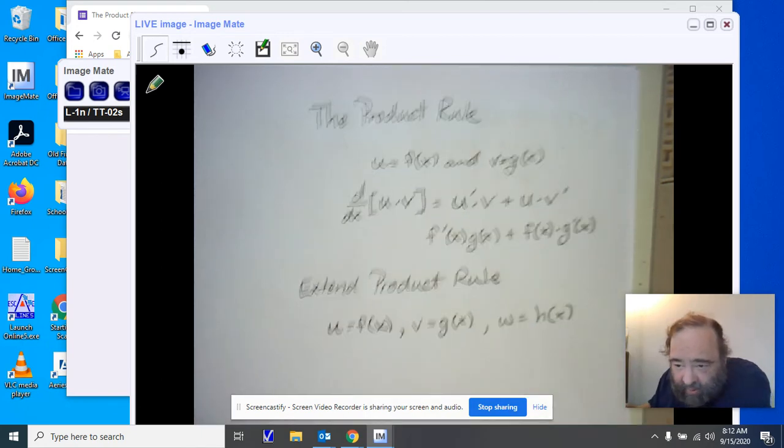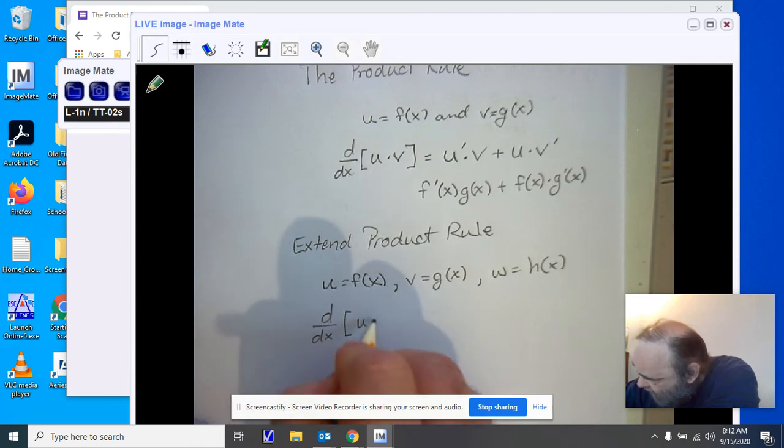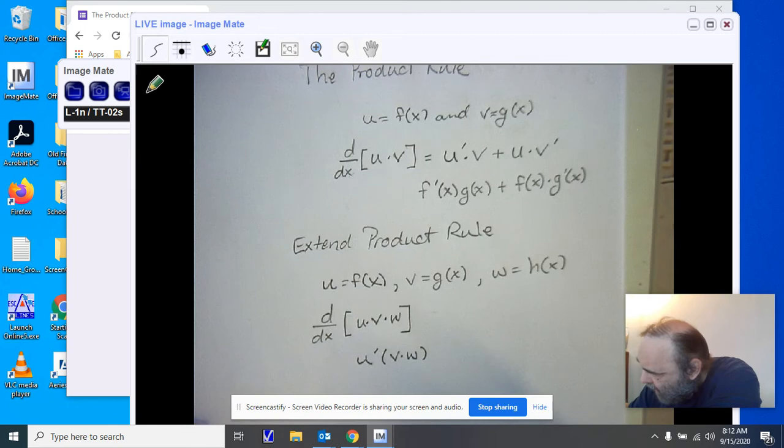You'll notice I'm trying to use a single letter. It's a lot easier to see. So if I have the derivative d dx of u times v times w, there's a product between each of them. We start off with the first one. We leave the other two alone. Notice there's still a product.